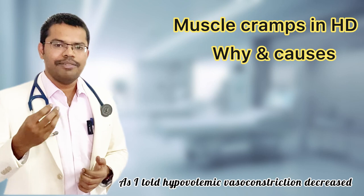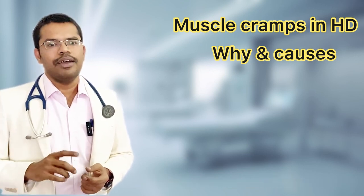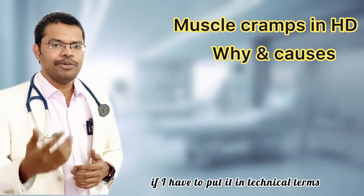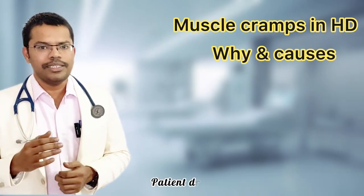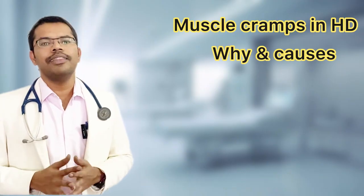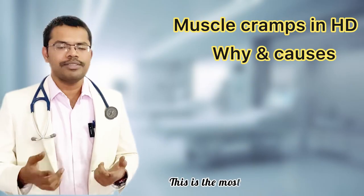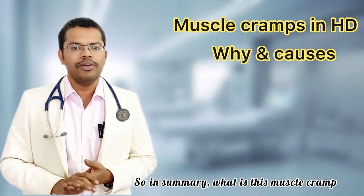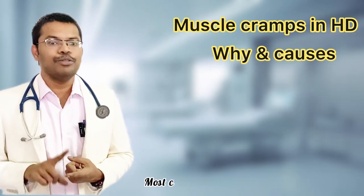As mentioned, hypovolemia causes vasoconstriction and decreased perfusion leading to cramps. Apart from that, in technical terms, this can be called wrong dry weight calculation — the patient's dry weight might be higher but it gets calculated on the lower side, thereby instructing excessive water removal during dialysis. This is the most common one.